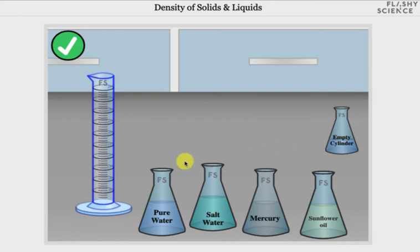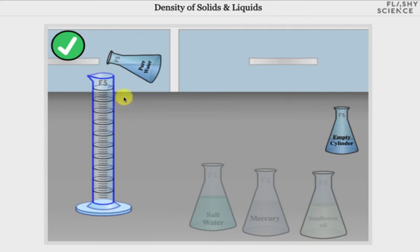Click and drag the flask containing the liquid you'd like to measure. I've chosen pure water so that it's above the measuring cylinder. Then click the flask again to start pouring the liquid into the cylinder. Click once more to stop the pouring or else just let all of the liquid in the flask be poured into the cylinder.